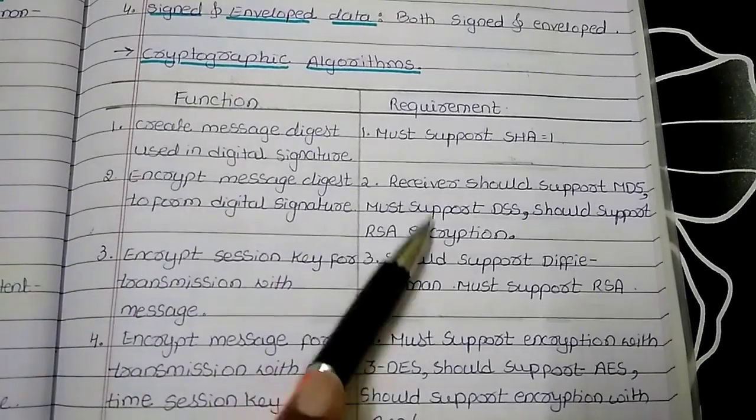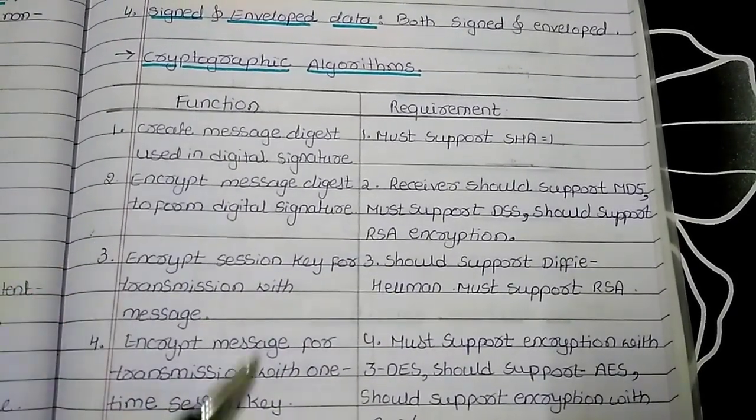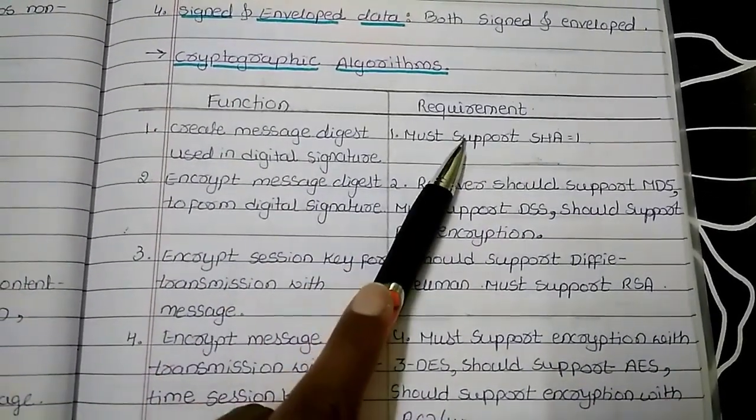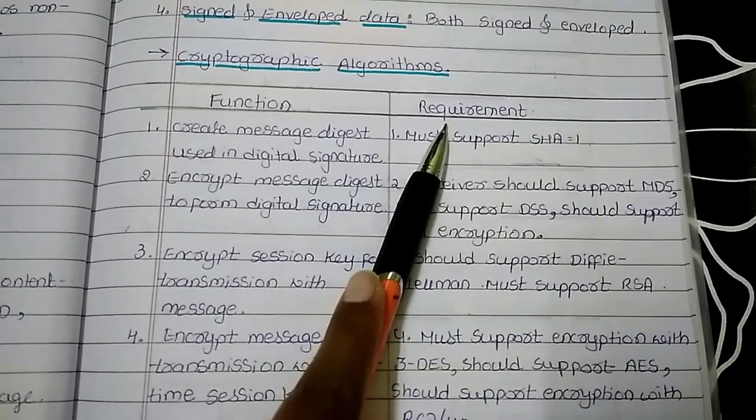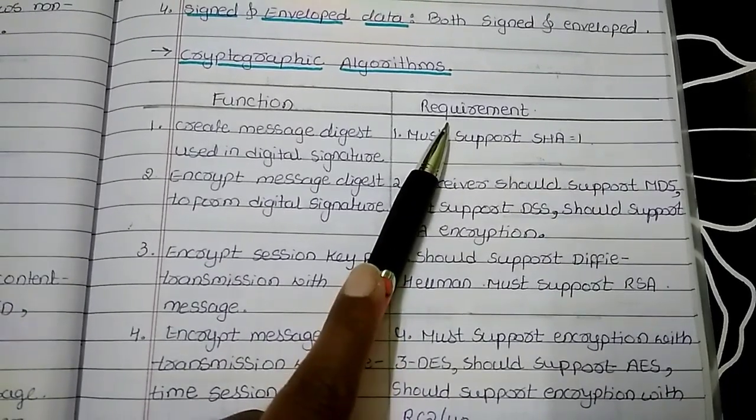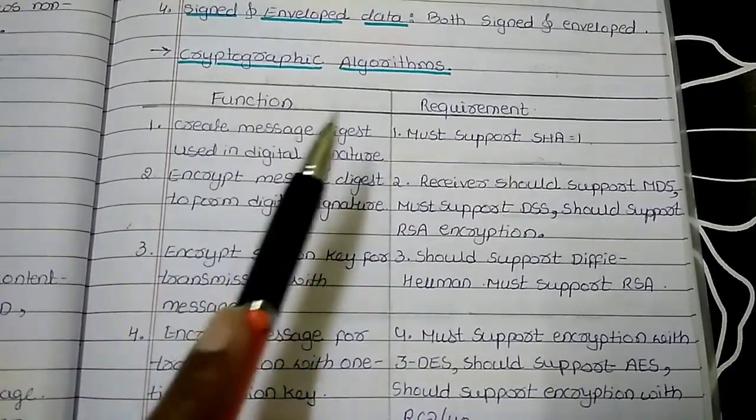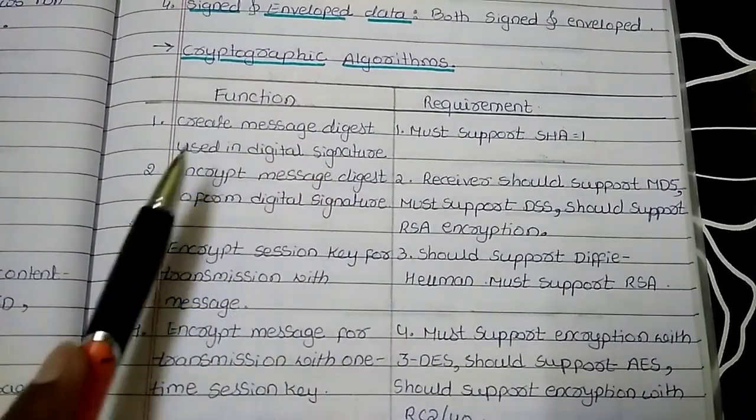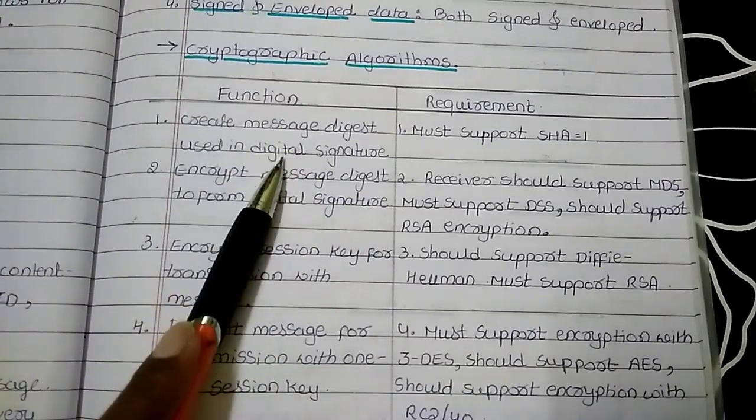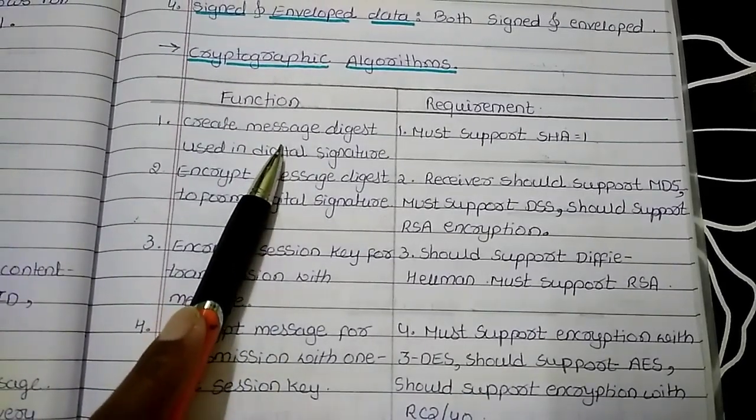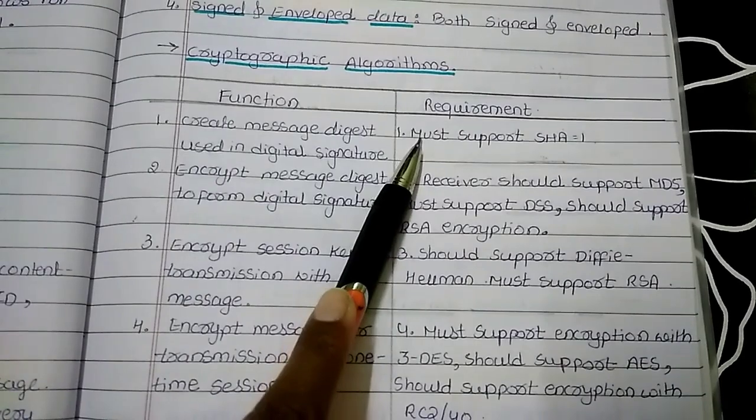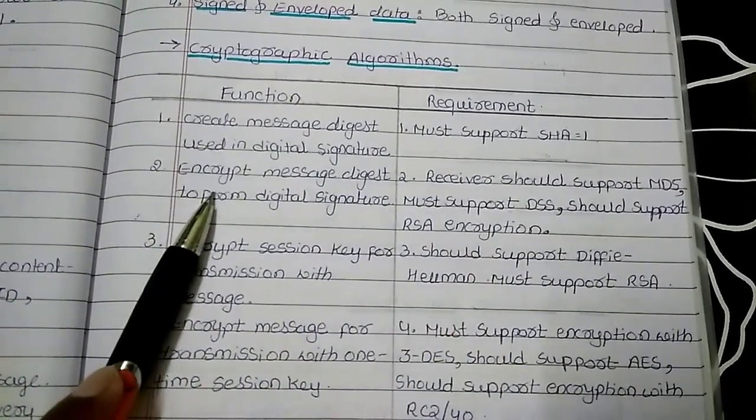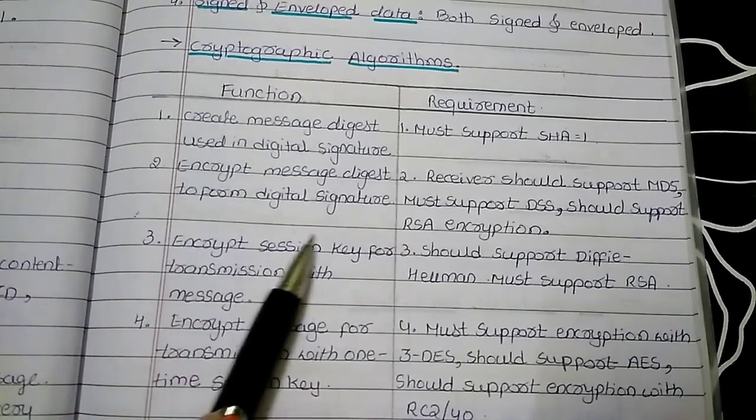I have divided the page into two parts. One side shows all the functions used by SMIME and the other shows the requirements indicating what kind of algorithm we use for each function. The first function is creating message digest used in digital signatures. To create message digest in SMIME, we require SHA algorithm. Next comes encrypt message digest to form digital signature.